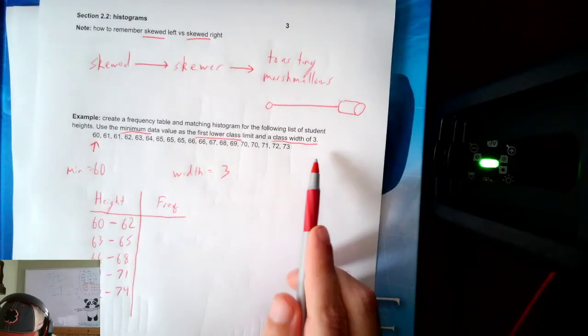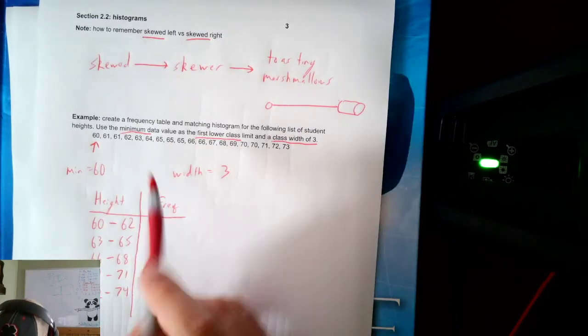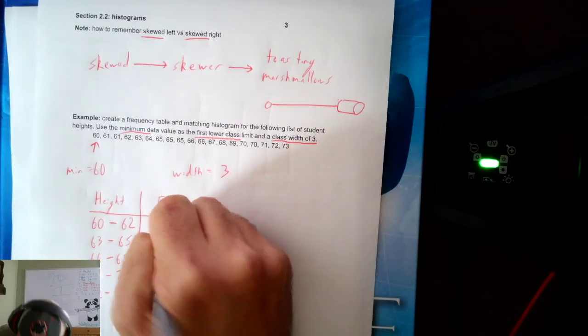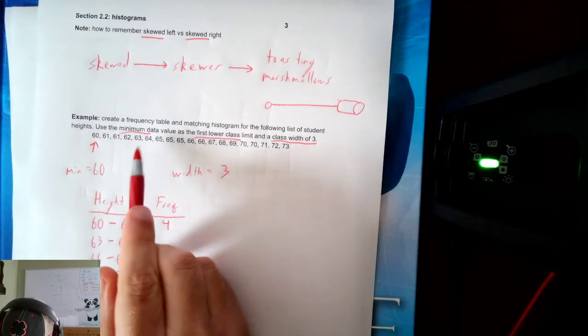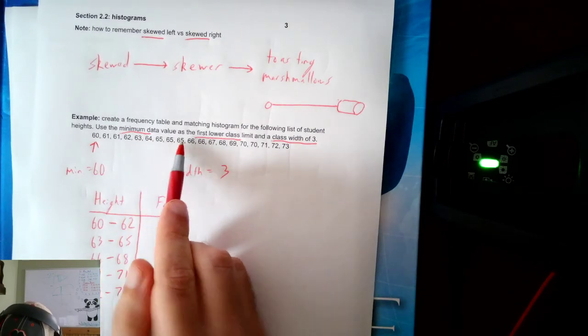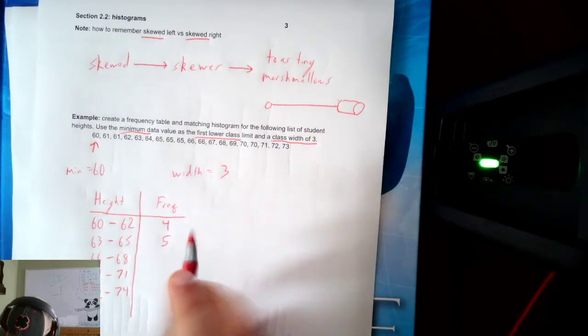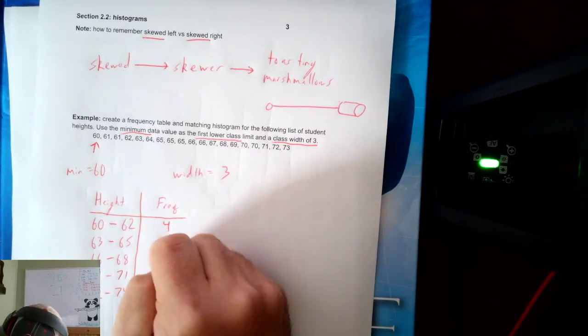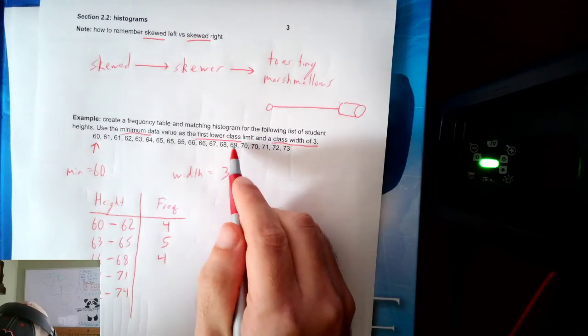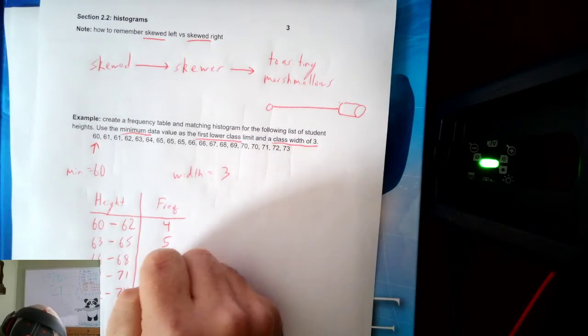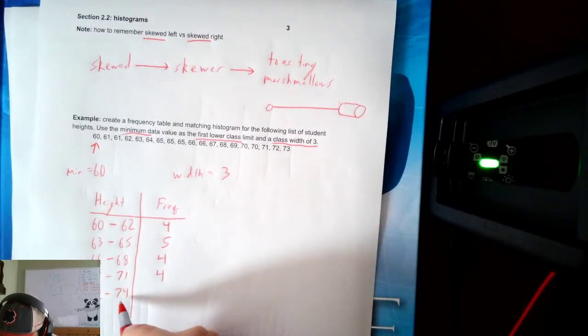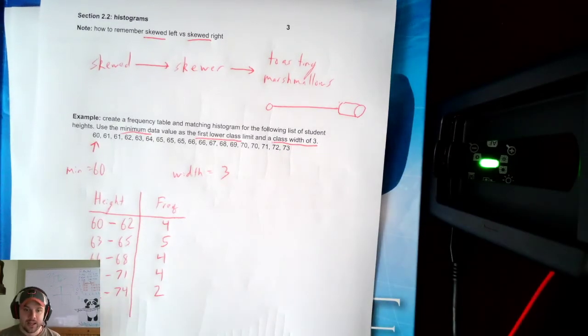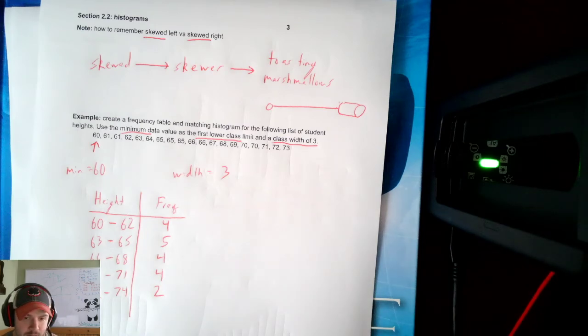66 tells me 65 comes before it. Then 68, then 71, then this last one. Remember, the 75 helps you remember it goes to 74. And those are my class limits. Now, I need to put my data in. Lucky for me, it's sorted. Let's see. 60 to 62 looks like 1, 2, 3, 4. So there'll be 4 for the frequency. 63 to 65: 1, 2, 3, 4, 5. Looks like I got 5. 66 to 68: 1, 2, 3, 4. Back to 4. 69 to 71: 1, 2, 3, 4. Looks like 4. And then 72 to 74: looks like 2 for the last one. My data was in order. Makes it a little easier for me if my data is in order.